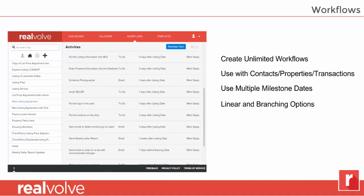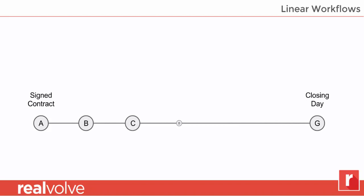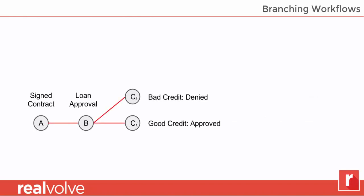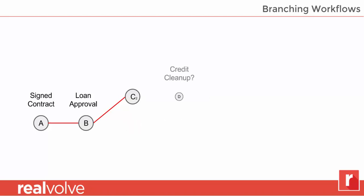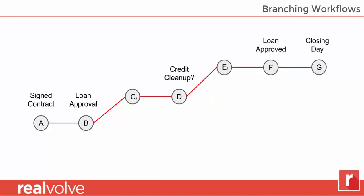Workflows can be set up to be linear or have branching options. Many CRMs have what they call action plans — very linear in design. From the time you sign a contract all the way to closing day, there are five, ten, twenty things that have to be done in a linear manner. That's great — it reminds you of things you need to do. The problem is, most of the time you don't work linearly. That's where branching options come in. If we take that same scenario — you have the signed contract, then there's a loan approval — you might have two different options: approved or denied. Through a linear process you can go on to approved, but what if it's denied? What about credit cleanup? Checking whether FICO scores were incorrect, whether they need credit counseling, or if there's just no chance of getting that credit cleaned up. If we continue on after credit cleanup, you can then get loan approval and then closing day. We've reached the same A to G but took an alternate path — we branched to a different method, giving us alternate options. That's really where the power of workflows comes into play.